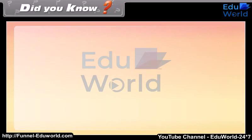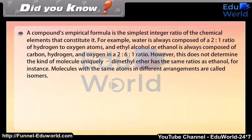A compound's empirical formula is the simplest integer ratio of the chemical elements that constitute it. For example, water is always composed of a 2 to 1 ratio of hydrogen to oxygen atoms, and ethyl alcohol or ethanol is always composed of carbon, hydrogen, and oxygen in a 2 to 6 to 1 ratio.